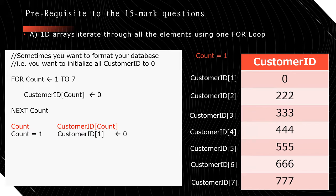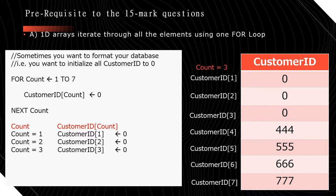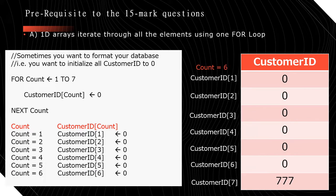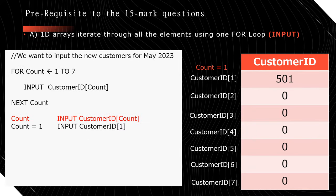Tracing the initialization: count equals 1, CustomerID[1] becomes 0; count equals 2, CustomerID[2] equals 0; count equals 3, CustomerID[3] equals 0; count equals 4, CustomerID[4] equals 0; count equals 5, CustomerID[5] equals 0; count equals 6, CustomerID[6] equals 0; and count equals 7, CustomerID[7] is now equal to 0. We've finished initializing the entire array to 0.